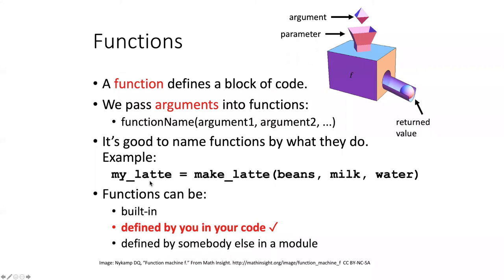Just to review, a function defines a particular block of code. We pass arguments into the function as arguments inside the parentheses of the function. Usually the name of the function tells us something about what it does. And then the return value, if there is one, comes out of the function and we can do things with that return value if we want.